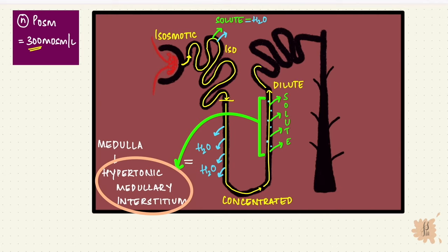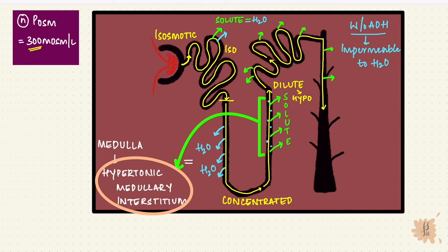The dilute urine enters the distal convoluted tubule. It's now hypoosmotic. In the early DCT, there's more reabsorption of sodium and chloride, so it becomes more dilute. In the late DCT and the cortical collecting duct, there's further reabsorption of solutes, but this portion is impermeable to water without the antidiuretic hormone. So without ADH, large volumes of dilute urine pass through and get excreted.